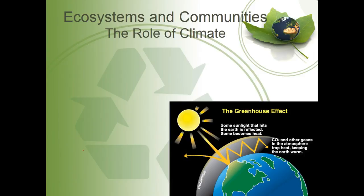Now in chapter four, we're going to get into ecosystems and communities, and we have to start by talking about the role of climate. Ultimately, ecosystems — if you remember from your vocab — bring in the abiotic and biotic factors within a specific area, and one of those abiotic factors is climate. We also talked about weather, sunlight, wind, and rain.